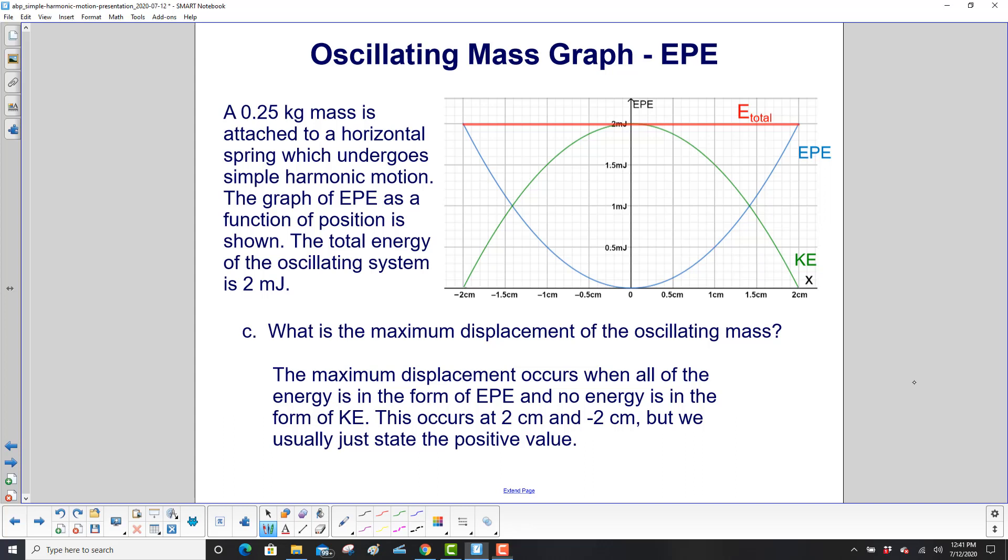What is the maximum displacement of the oscillating mass? You look at the graph. And the graph does not go past two centimeters. So that tells you that since the kinetic energy is zero and the elastic potential energy is a maximum, you're at the end of the limits there of your oscillating mass.